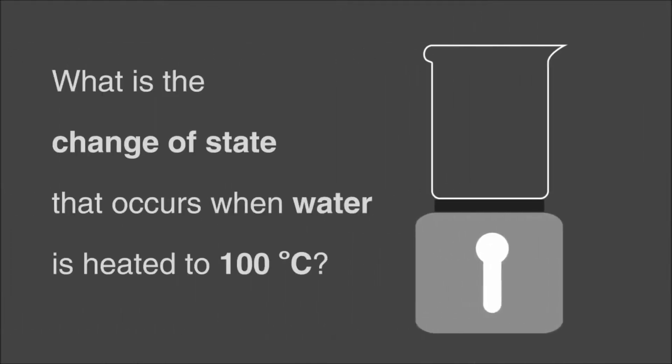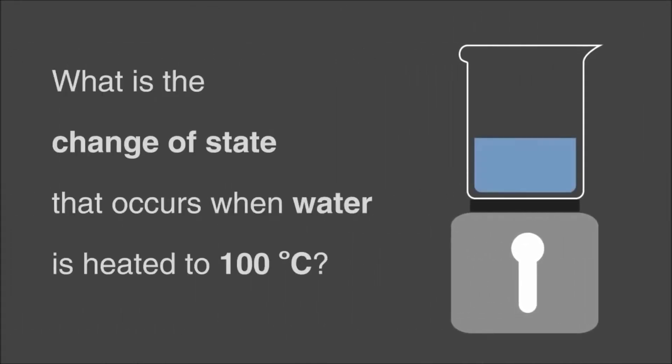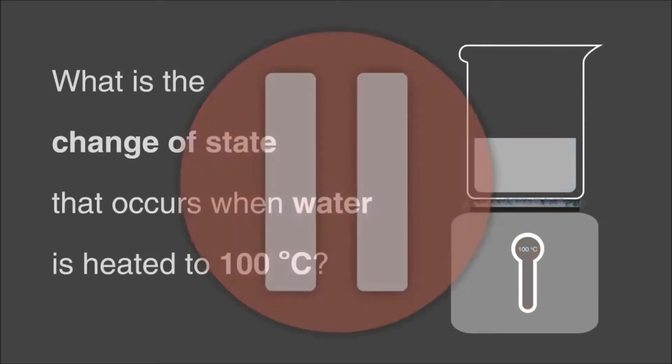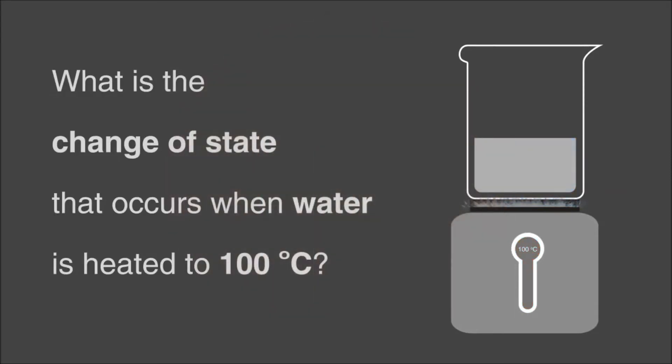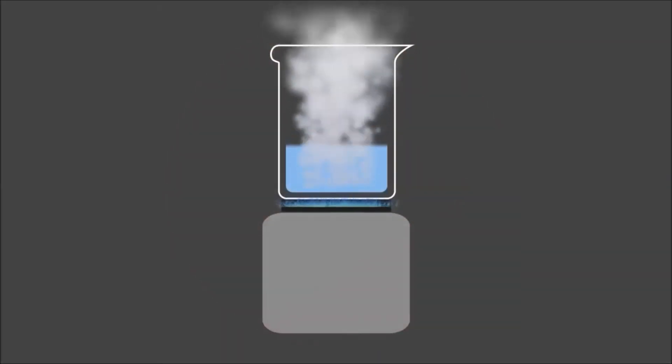What is the change of state that occurs when water is heated to 100 degrees Celsius? Pause, think, and continue when ready. The answer is, water evaporates from a liquid to a gas. In our case, water vapor.